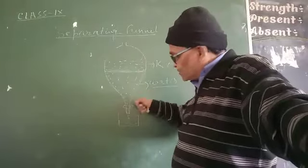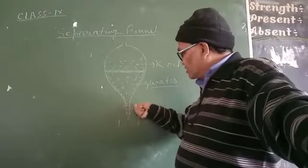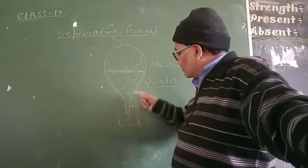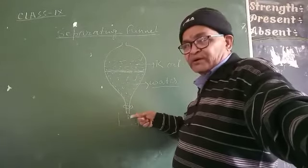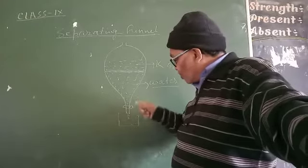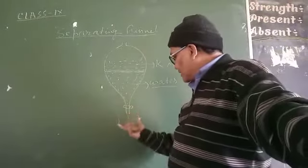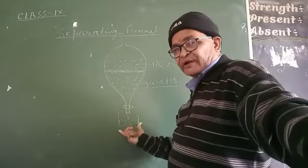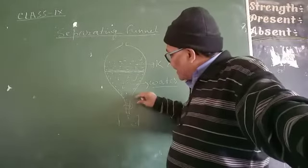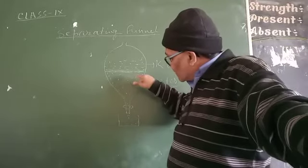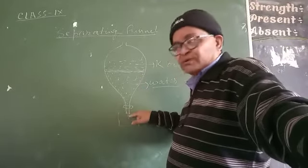When we start opening the mouth at the narrow end of the separating funnel, water starts falling drop-wise. We collect the water in a separate beaker and slowly allow the mixture to pass through.